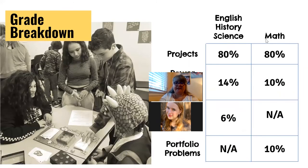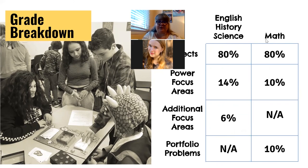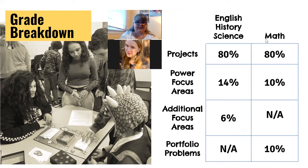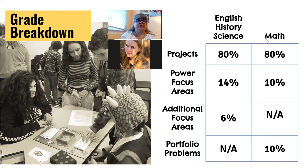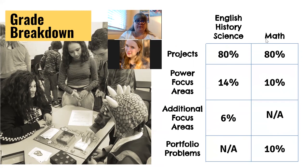In terms of grade breakdown — in English, history, and science, projects are worth 80%, power focus areas 14%, and additional focus areas 6%. Additional focus areas are important content, just not as important as a power focus area, and it's very hard to get an A in a class if you don't do the additionals. In math, the grading is slightly adjusted: projects — which are really larger math units — are worth 80%, power focus areas are 10%. Math doesn't have additional focus areas; instead they have portfolio problems, which are a series of activities and word problems to make sure you understand the material to execute the unit assessment as well as you can.